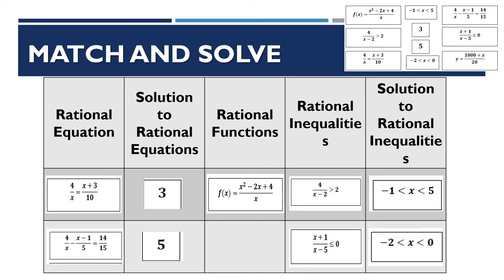The last one is y = (1000 + x) / 20. Since it has a y, it falls under column 3, rational function. And we are done with the activity.